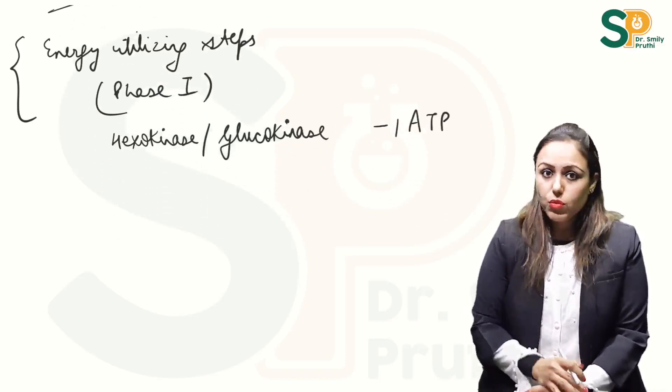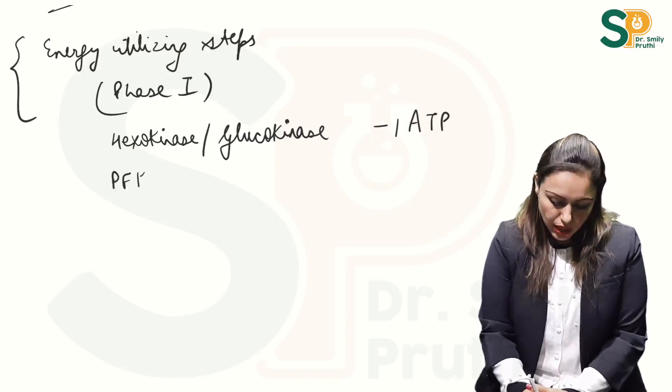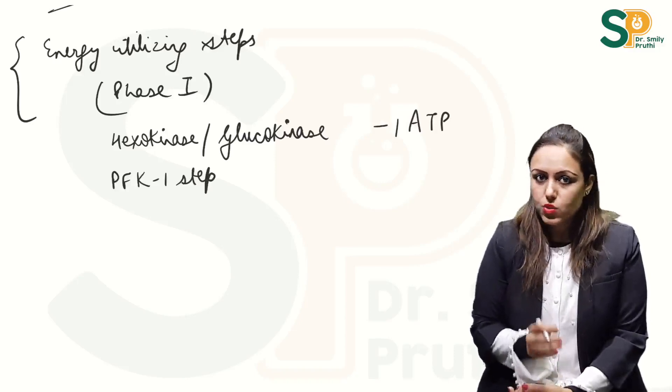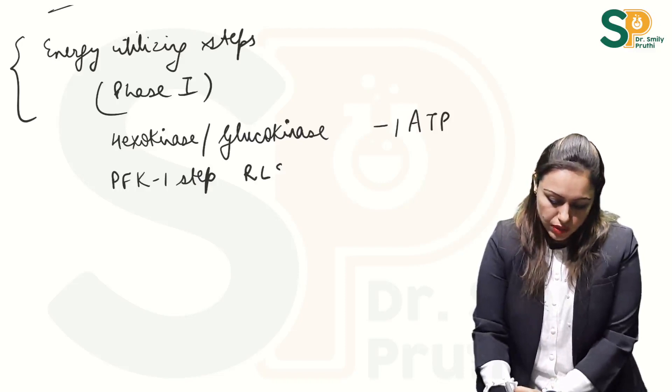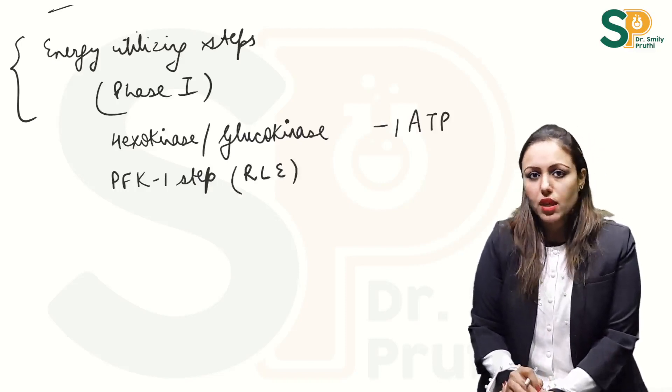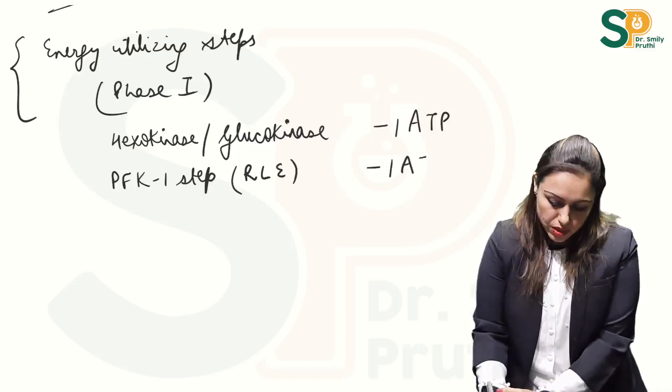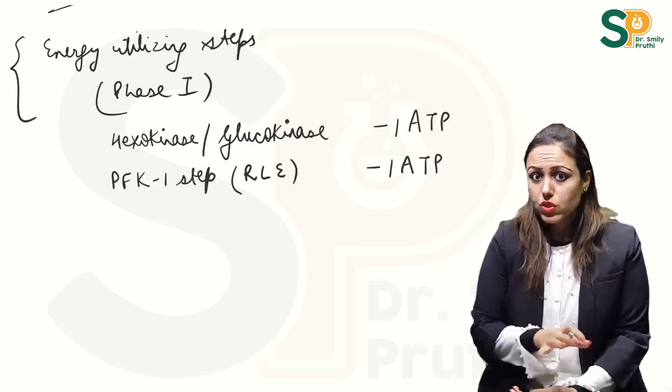So there is one more step in phase one that is PFK-1 step, the full form is phosphofructokinase-1 step. This enzyme is also the rate limiting enzyme of glycolysis and this enzyme is also using one ATP. So again I will write minus one ATP here. So this was about phase one.